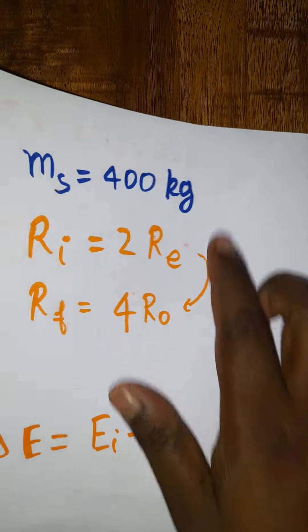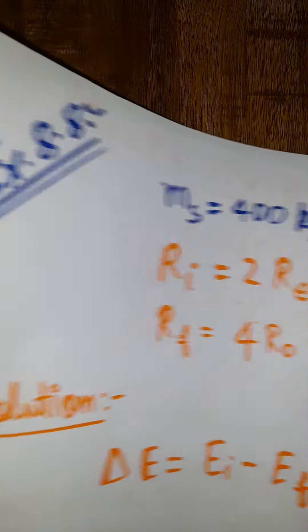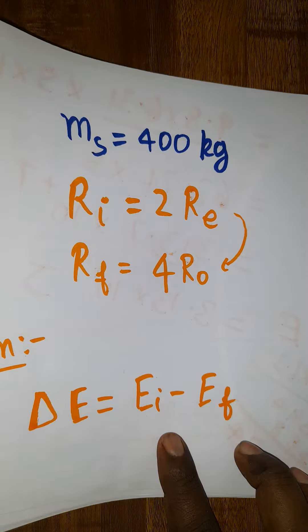First, the given data: mass of the satellite, initial radius, and final radius are given. They ask what is the change in energy.